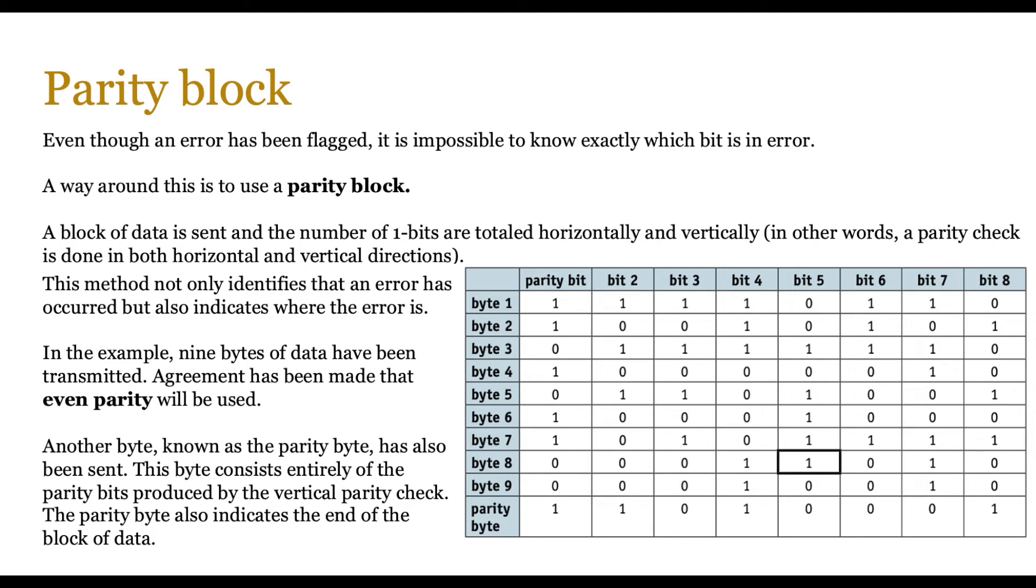A block of data is sent, and the number of bits are totaled horizontally and vertically. In other words, you do a parity check both in a horizontal and vertical direction. So on screen, you see this example where you got nine bytes being transmitted. The first column is the parity bit, and then the remainder is the data.